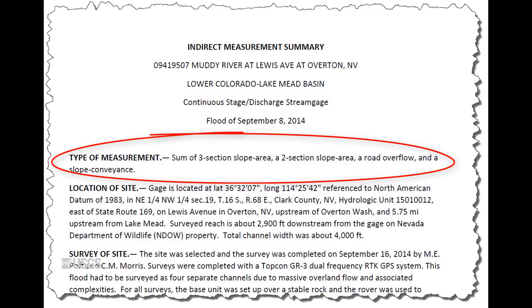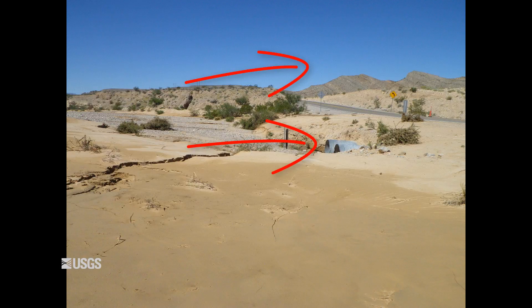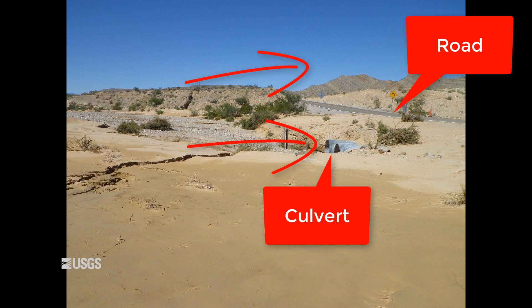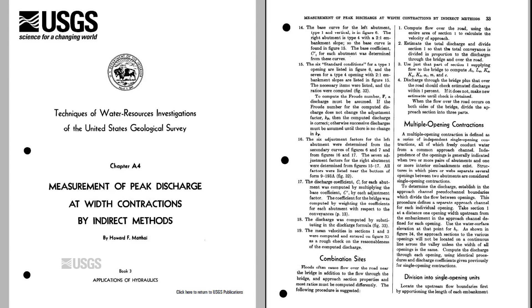If you have a situation like that, check out the videos on each different component. The second type of multiple component is the focus of this video, and involves flow going through a structure and over another structure at the same time. For example, you could have flow going through a culvert and over the road on top of the culvert. The key difference is that you are using a common approach area versus completely separate channels. The computational approach for a divided flow is discussed in TWRI Book 3, Chapter A4, page 33.